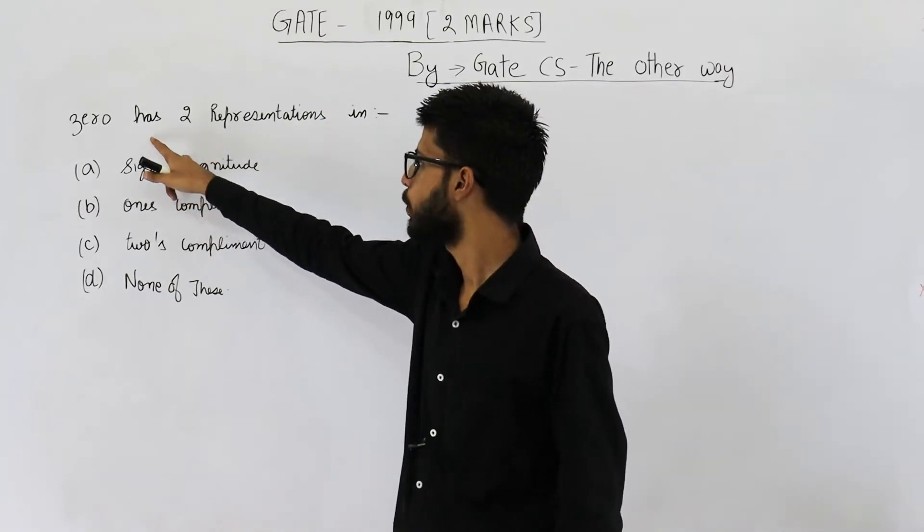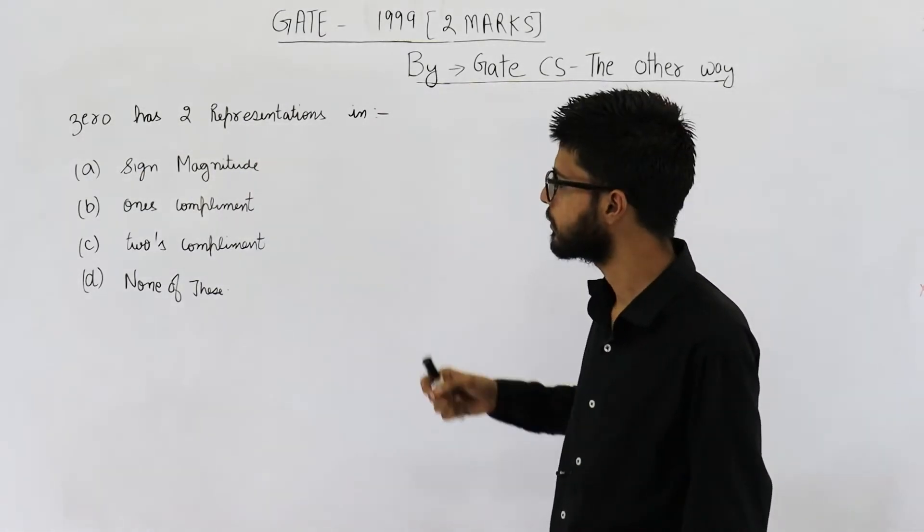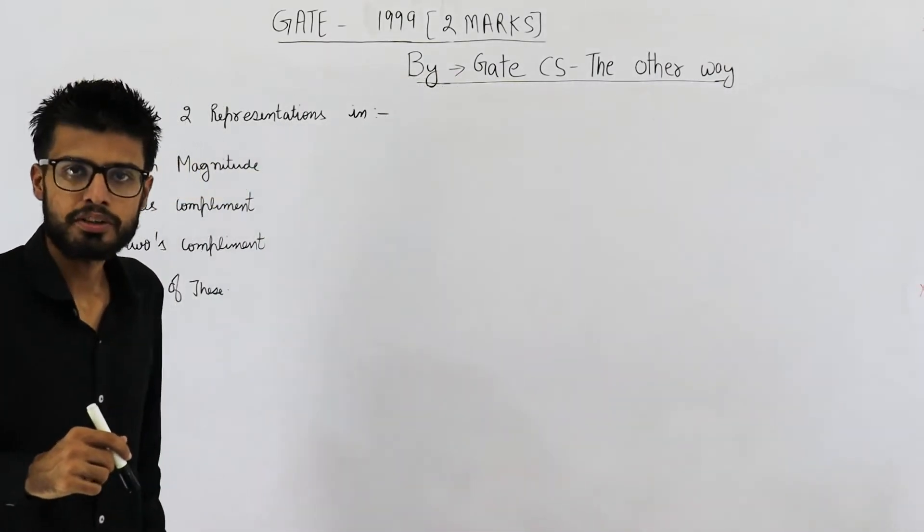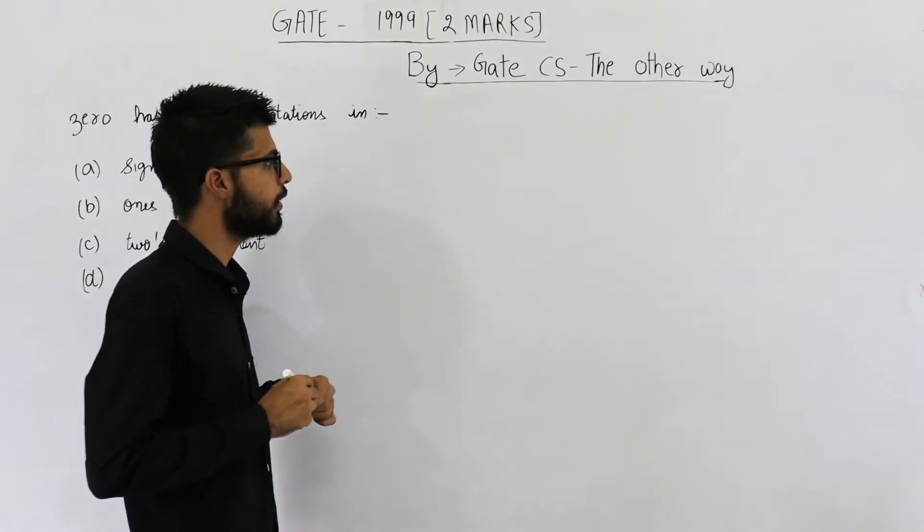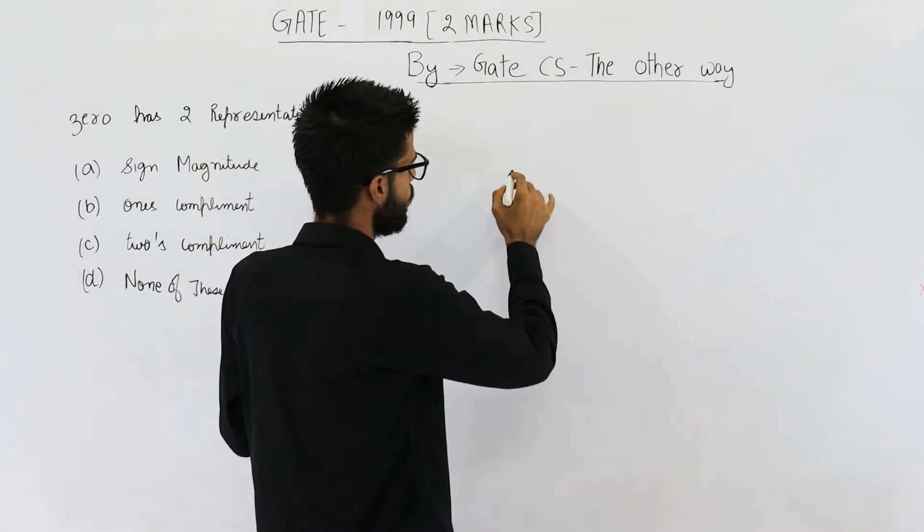They are saying zero has two representations in option A, sign magnitude. Let's analyze this one. Zero will actually have two representations in sign magnitude form because suppose we are using three bits for magnitude and one bit for sign.